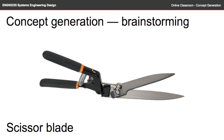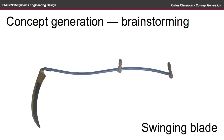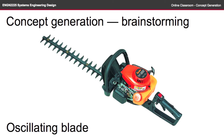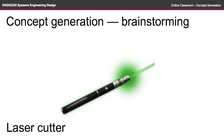So remember we're having a brainstorming session, so all ideas are on the table. Perhaps you could cut the grass with some scissors, in a scissor style blade. Or you could use the rotating wires or cord that you often see in some sort of whipper snipper. Or perhaps you could use some sort of swinging blade like this scythe, although it might be very difficult to get really nice short grass using this blade. Or perhaps some sort of oscillating blade like you find on hedge cutters. Or you could use a saw style blade like you might find on some brush cutters.